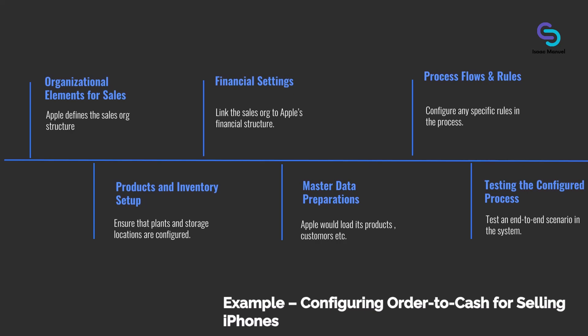Through these steps, we see that configuring business processes is about telling SAP how Apple does business using predefined forms and switches. Apple doesn't need to program how a sales order works — SAP already knows how to handle an order, deliver, invoice, and so on. Apple just needs to input their organizational data, choose which options to turn on or off, and maybe adjust thresholds or defaults. SAP Central Business Configuration keeps this organized by listing all required configuration activities based on the scope Apple chose, ensuring nothing critical is missed.